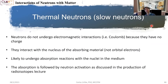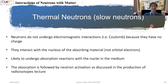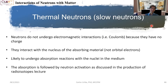We talked about thermal neutrons in the past — these are basically slow neutrons. Because they don't have charge, they don't really undergo any electromagnetic interactions, but they will interact with the nucleus of the absorbing material, not really with the orbital electrons. They will really just go into collisions with the nucleus.